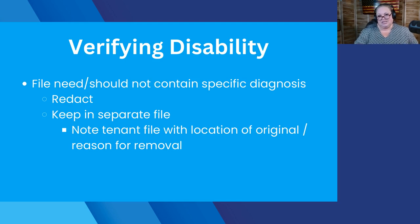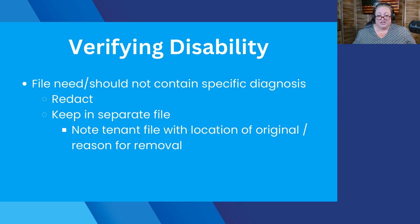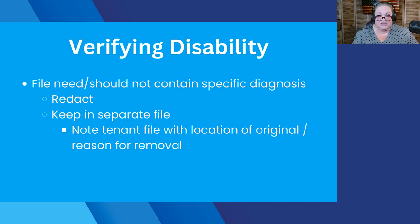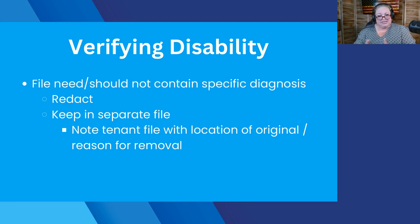We need to know: yes, she has a disability, and yes, she qualifies for an adapted unit. Should you get a healthcare provider letter with information you don't need, you want to exclude that from the file. You can do that one of two ways: you can redact it — black out the specific diagnosis or information you don't need and note the file that you've redacted that specific information — or you can keep the specific note in a separate file and make a note in the tenant file stating that the physician provided a note confirming that the person has a disability.